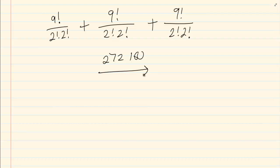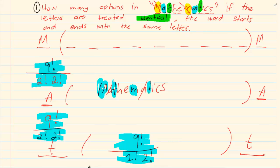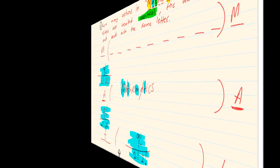Remember, when using this rule: whatever letters you are taking out — remove them and only work with the remainder. I had 11 letters, I took out the M's, and I only worked with the remaining 9 letters, ignoring M completely. Thank you for watching.